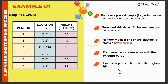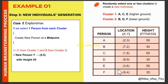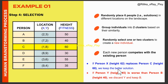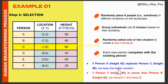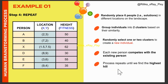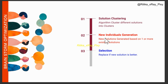New individual generation means creating new ideas. New solutions are generated based on one or more existing solutions. If a new solution is based on one cluster it fine-tunes the best existing idea — that is exploitation. If a new solution is based on two clusters it explores new ideas by combining different ideas — that is exploration. In selection, after generating new solutions we keep the best ones and discard weaker ones. This process ensures that over time the overall quality of solutions is improved.